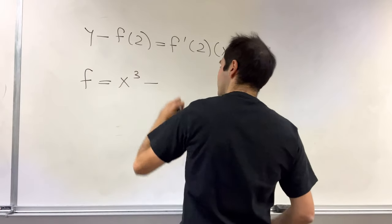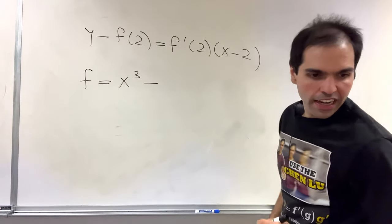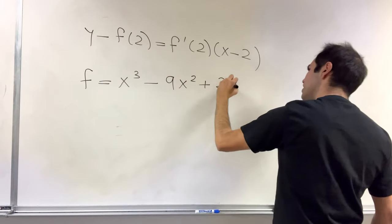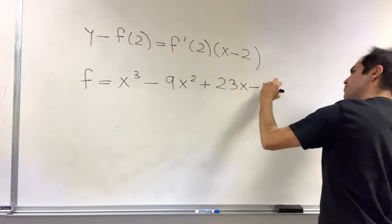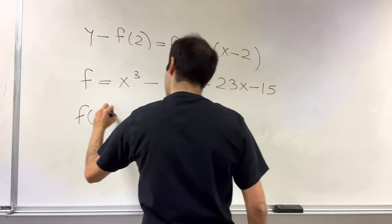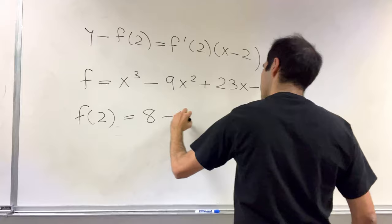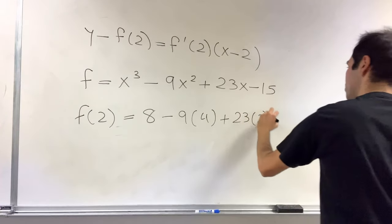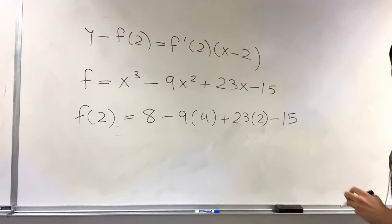It was x cubed minus 9x squared plus 23x minus 15. So f of 2, that is 8 minus 9 times 4 plus 23 times 2 minus 15, which I think is 3.